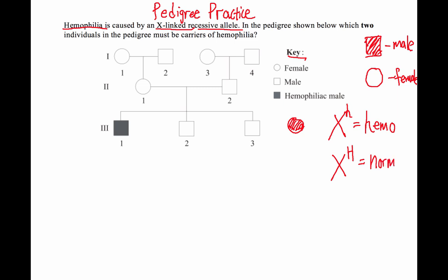And I know that normal is dominant over this recessive hemophilia. If you don't know, that disease is a disease that actually limits your ability to clot blood, and we're gonna see that men get affected more. If you've done the practice questions already you might be okay with this. So now what is the question exactly asking me? It says in the pedigree shown below, which two individuals in the pedigree must be carriers?